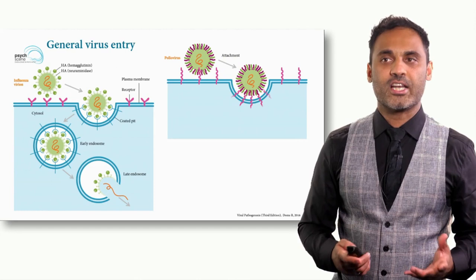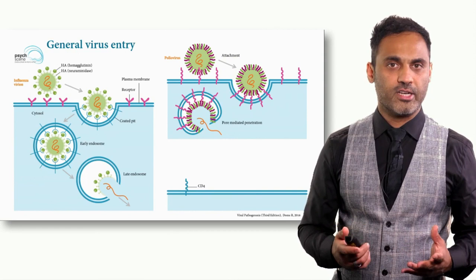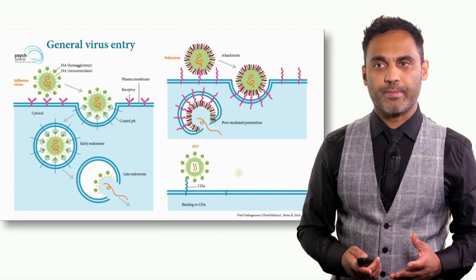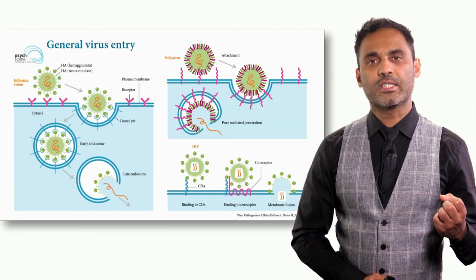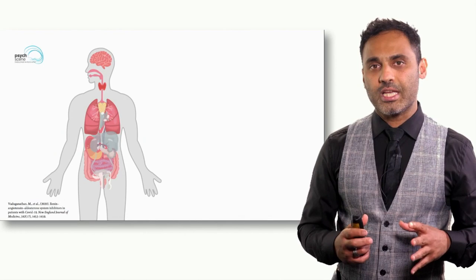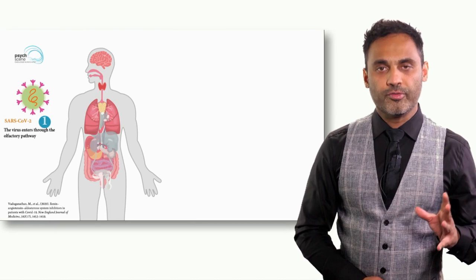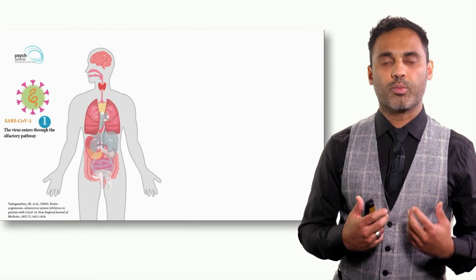The poliovirus uses pore-mediated penetration — a slightly different mechanism. HIV uses the CD4 receptor, binding to a co-receptor and then undergoing membrane fusion. The SARS-CoV virus uses the ACE2 receptor to enter cells — I'll refer to it as the CoV or coronavirus for simplicity.